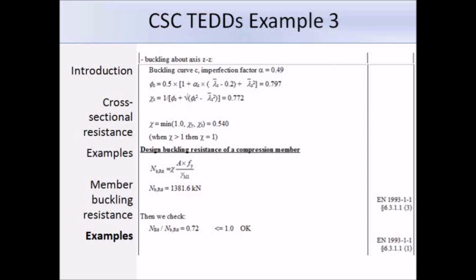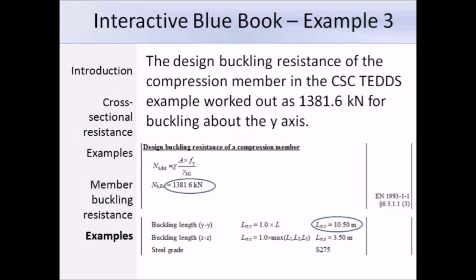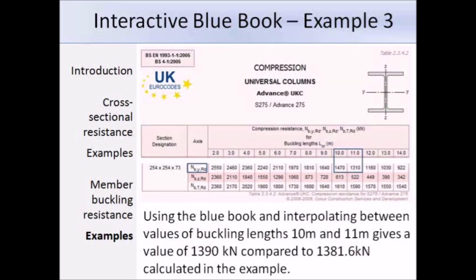Since we used the y-axis reduction factor with a buckling length of 10.5 metres, giving a design buckling resistance of 1381.6 kN, we can compare to the interactive blue book. For a 254 x 254 x 73 UC in grade S275 steel, interpolating between buckling resistance values for lengths of 10 and 11 metres gives approximately 1390 kN, which is close to our calculated value.